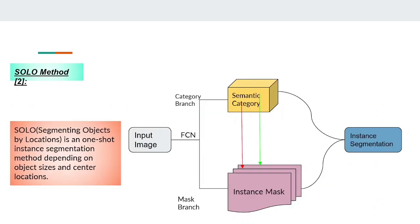The third model is named Segmenting Objects by Location, or SOLO. It does not depend on bounding boxes to generate masks. It assumes that almost every object will have a different central location and size. The input image is fed into a Feature Pyramid Network and then a fully convolutional network. The output is divided into two parallel branches: the category branch and the mask branch. With these two parallel branches, instance segmentation is achieved and it is computationally more efficient.